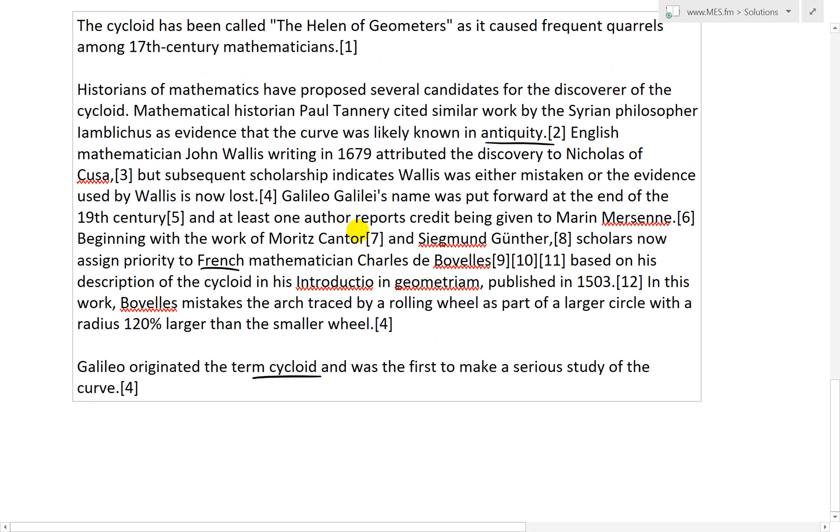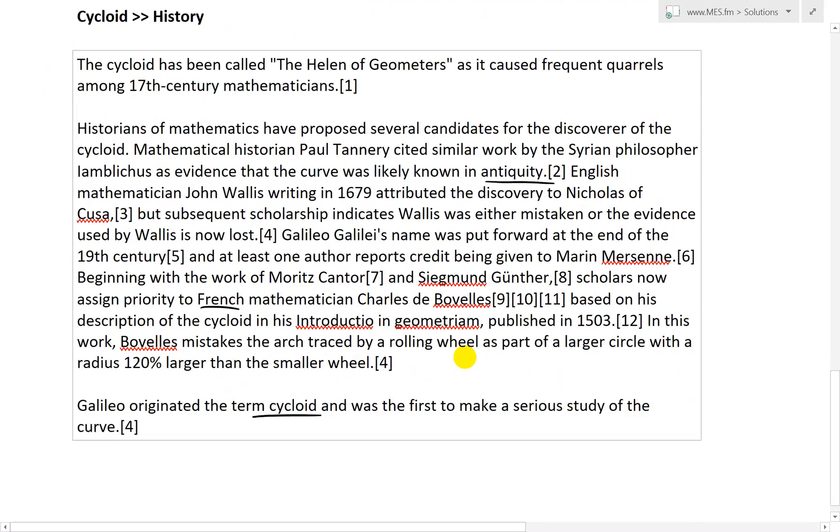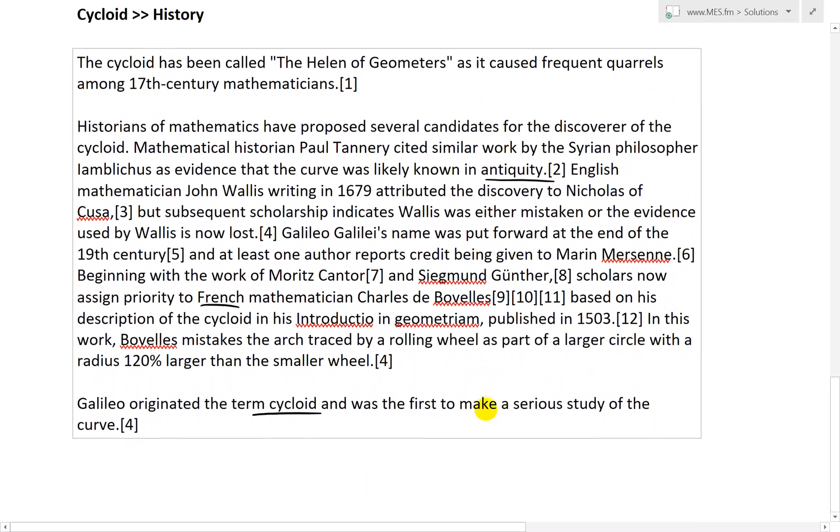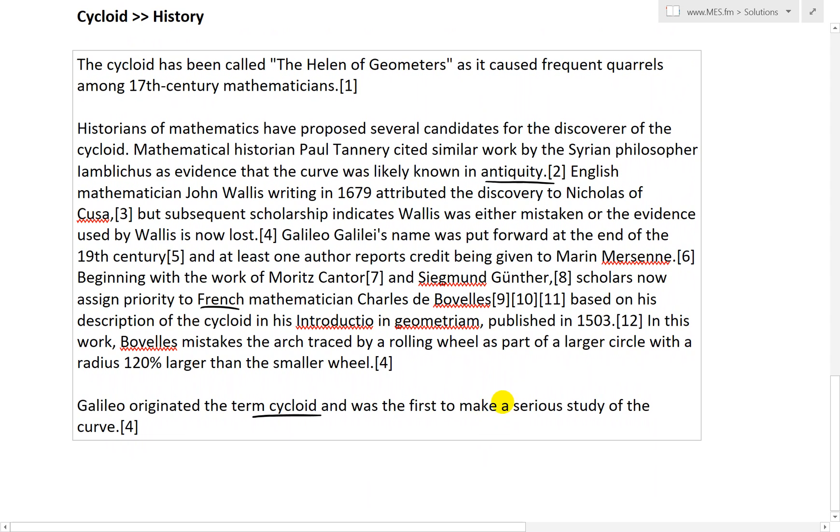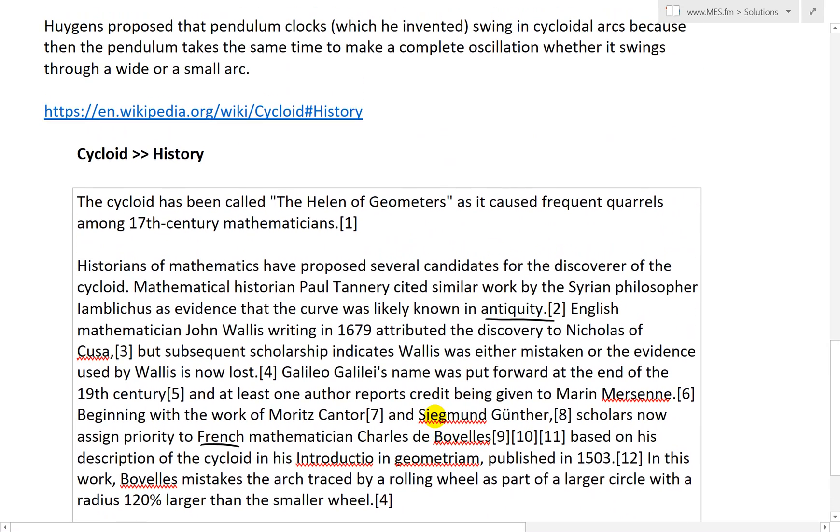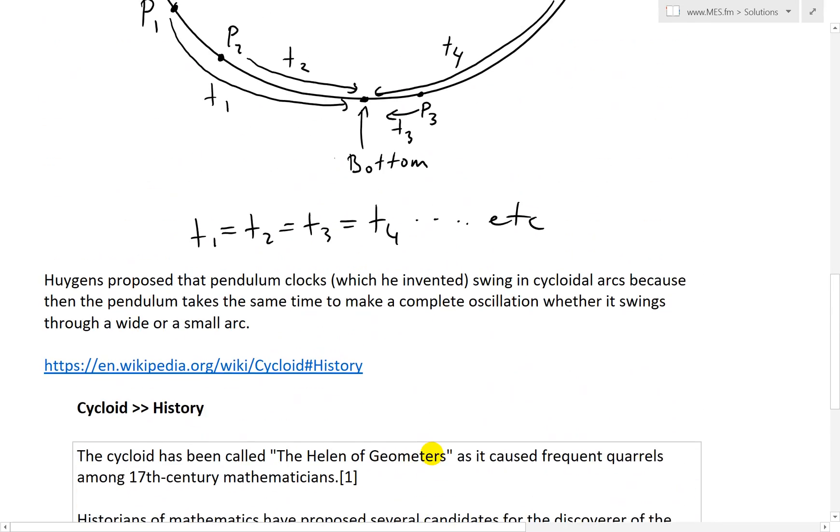As you can see here, a lot of people are just arguing who was the originator or the founder of the cycloid. But again, what matters most is people that just write it down, what they call it, and then go about studying it rigorously like Galileo Galilei. And that's why he's more famous than a lot of these other mathematicians.